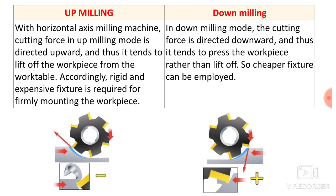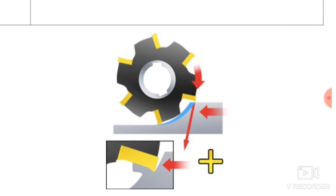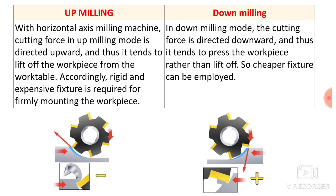In down milling mode, the cutting force is directed downward and thus it tends to press the workpiece rather than lift it off. So a cheaper fixture can be employed. In up milling the force lifts the workpiece, whereas in down milling it presses the workpiece down, so we can use a cheaper fixture since the cutting force is in the downward direction.